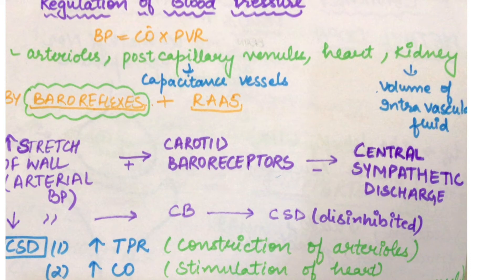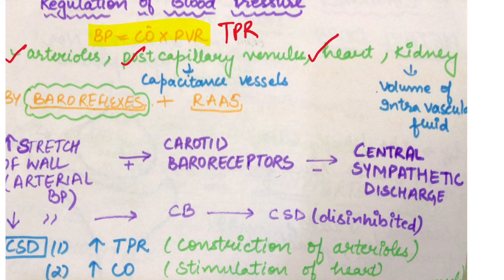Then comes the regulation of blood pressure. Blood pressure = Cardiac output × TPR (total peripheral resistance). This regulation mainly happens at four anatomical sites: first is arterioles, second is post-capillary venules or veins, third is heart, and fourth is kidney. In these four anatomical sites we have regulation.